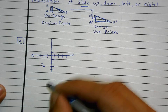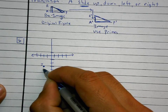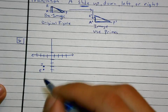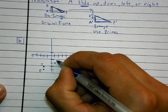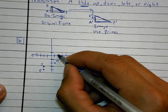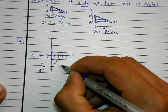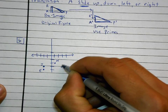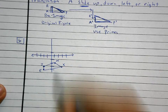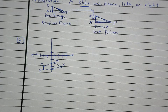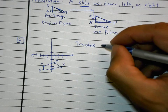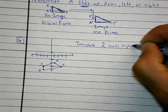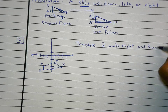So here we have points J, E, M, and X plotted on the coordinate plane — that's my object right there: J, E, M, X. And the directions for number six say: translate two units right and three units up.